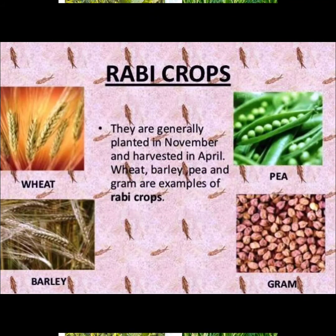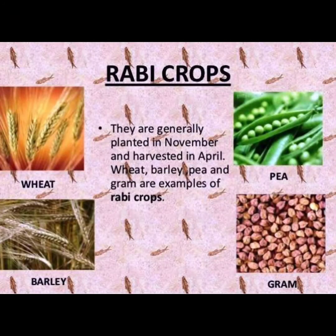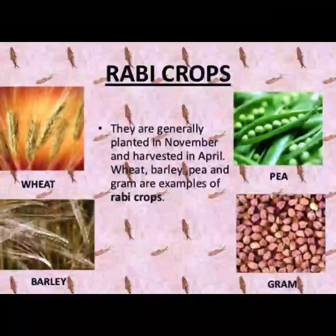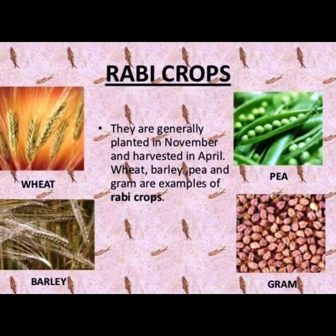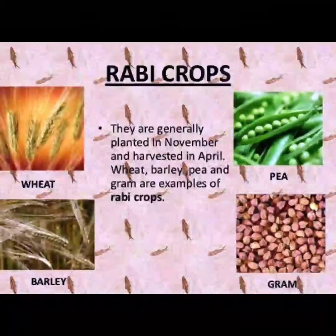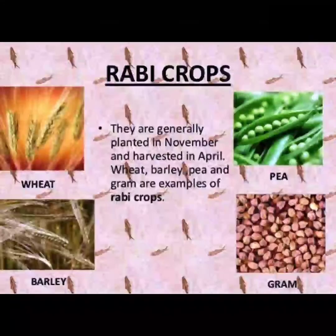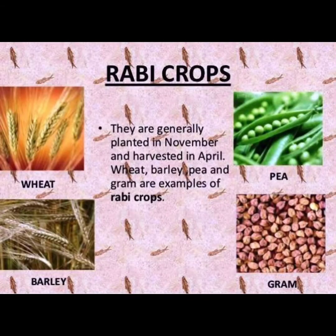Now I am going to tell you about Rabi crops. They are generally planted in November and harvested in April. Harvested means Katna. Wheat, barley, pea and gram are the examples of Rabi crops. Rabi crops are planted in November and harvested in the season of April.